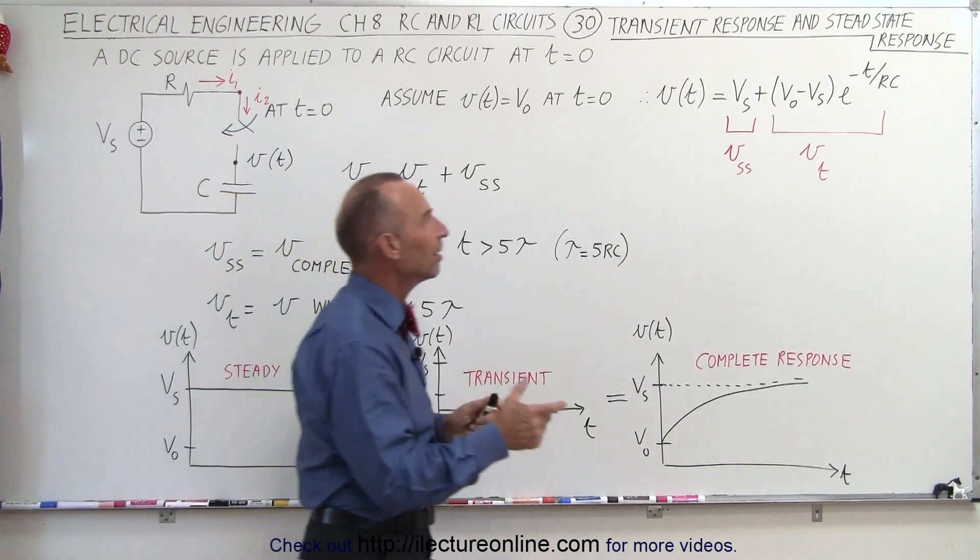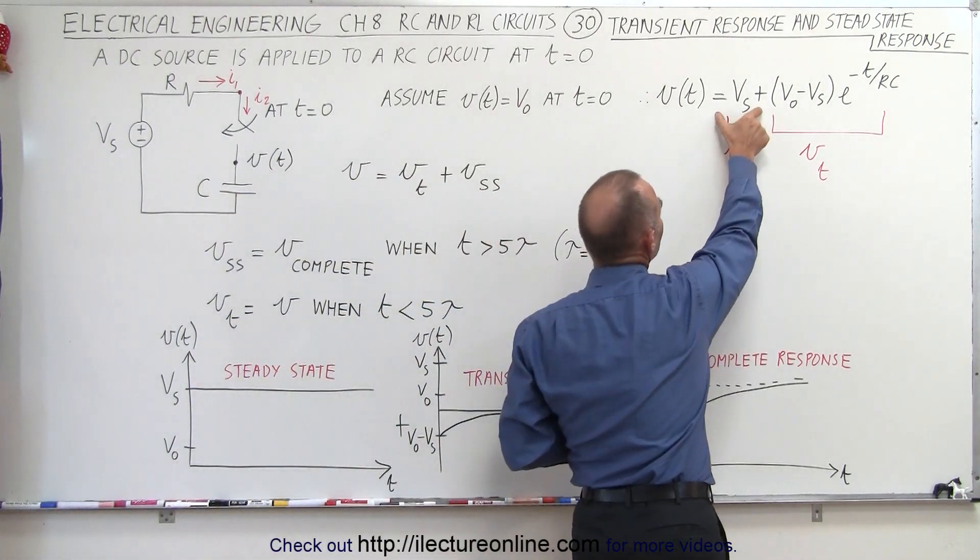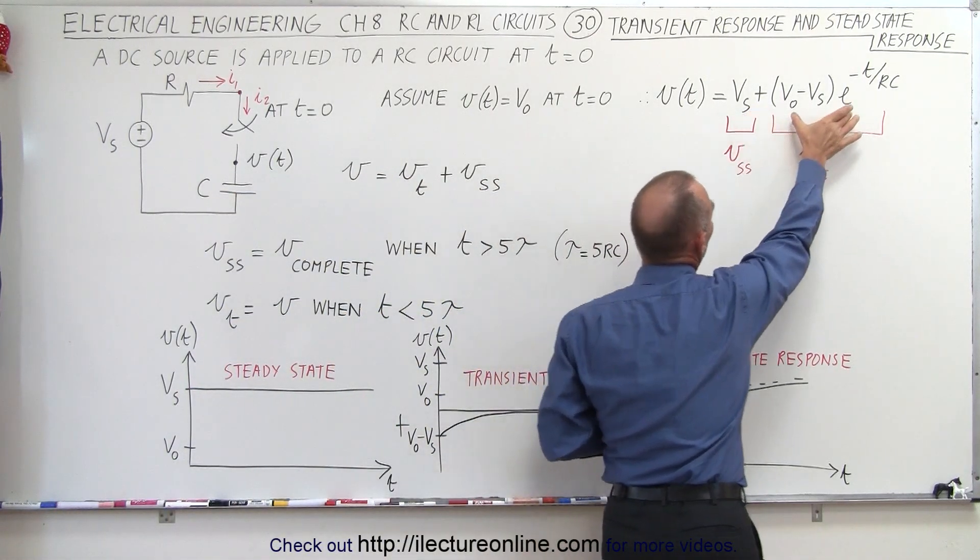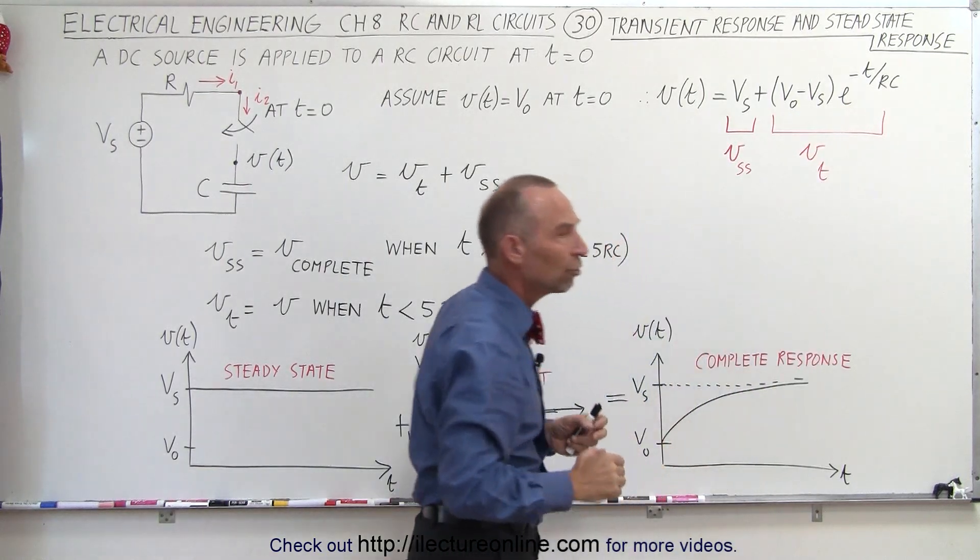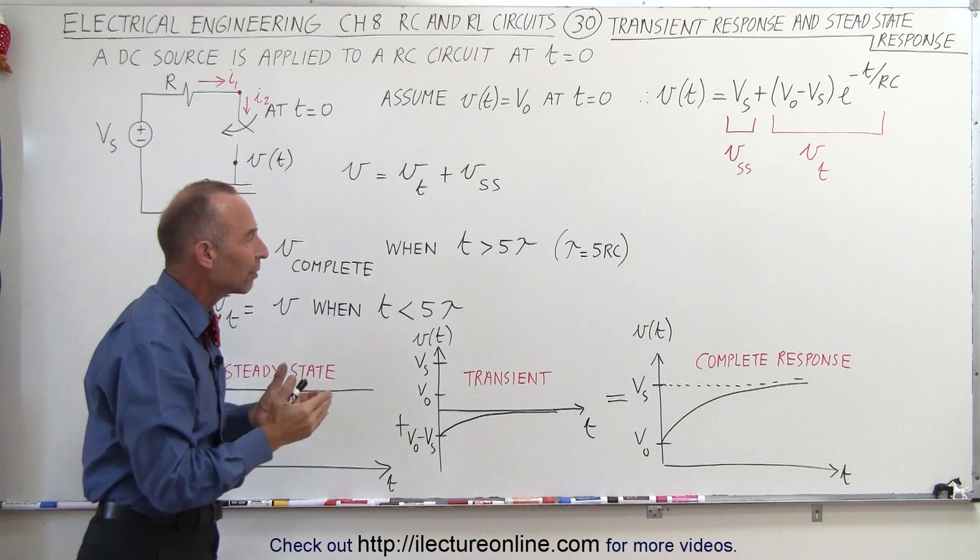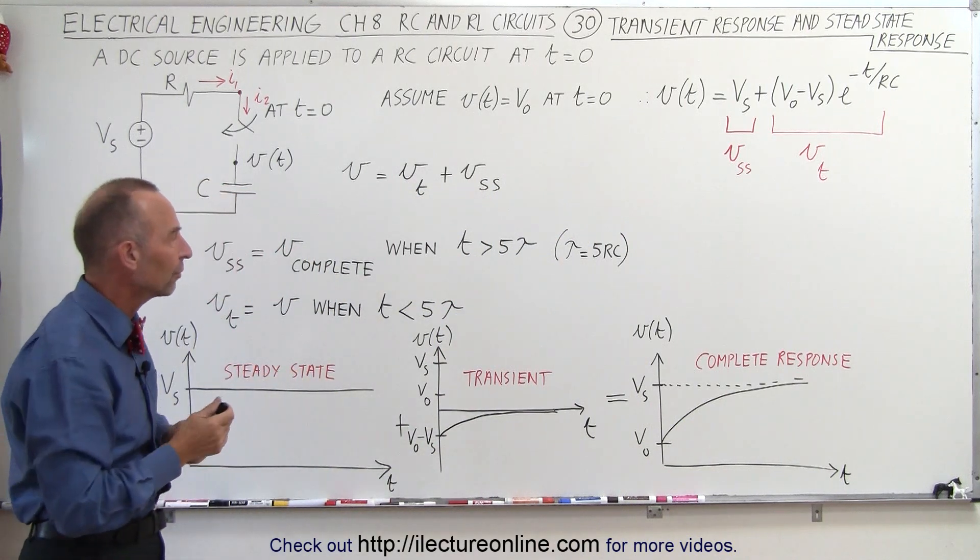What we've been able to do here is identify the V sub S as being the steady-state response, and the rest of the equation here as being the transient response. The transient response is only active for the first five time constants of the circuit.